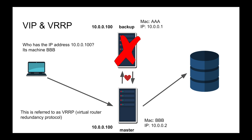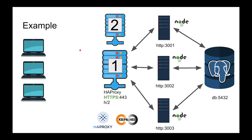A virtual IP address is essentially a fictitious thing that machines advertise as their answer to ARP requests. Software engineers really need to understand this stuff. Let's take a real-life high availability example. There are a bunch of machines — a load balancer, a backend service, and a database.